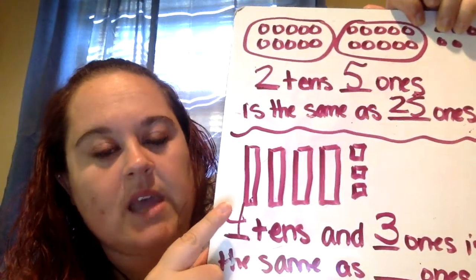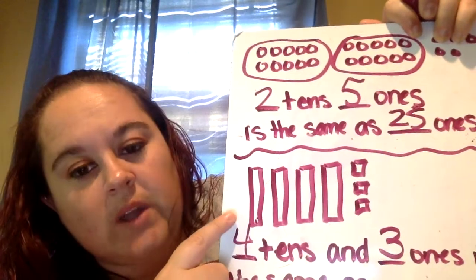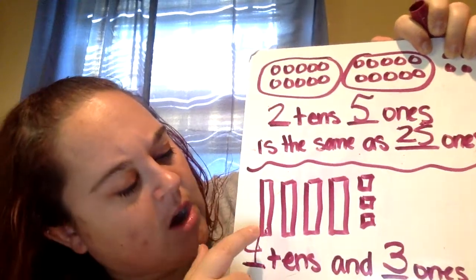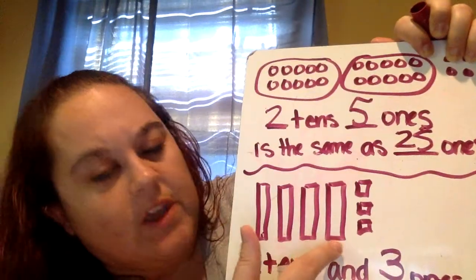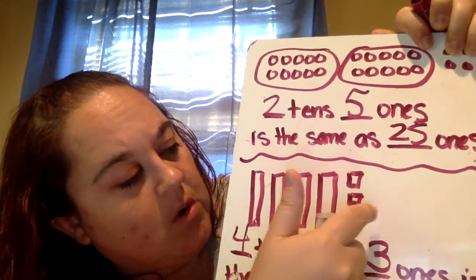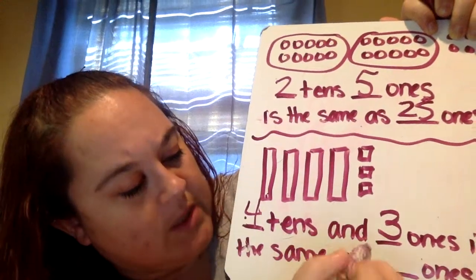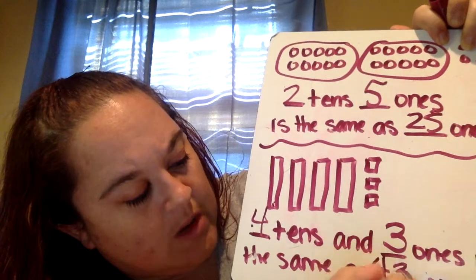Remember that to make a ten you have to have ten ones. So if one ten makes ten ones, that means there are ten, twenty, thirty, forty ones in our tens plus three more. So forty-one, forty-two, forty-three. So four tens and three ones is the same as forty-three.